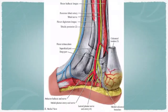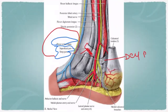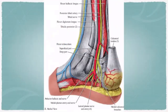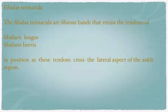The flexor retinaculum has both a superficial part and a deep part. In the specimen, the superficial part and the deep part can be identified and observed clearly.